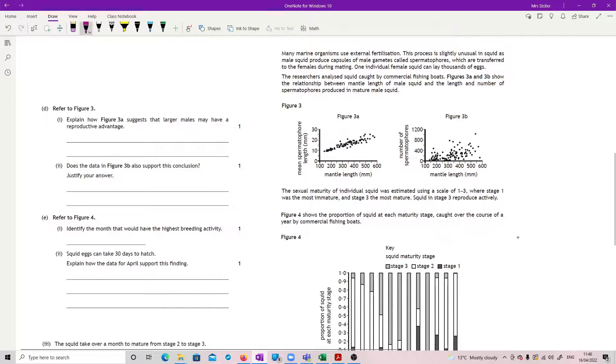The researchers analyzed squid caught by commercial fishing boats. Figure 3a and B show the relationship between mantle length of male squid and the length and number of spermatophores produced in mature male squid. So we've got in 3a the mean length of the spermatophore and the mantle length. It's just literally the size of squid and how big is the package of sperm that they produce.